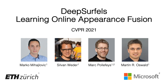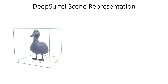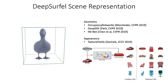We approach the problem of online appearance fusion with deep circles, a novel hybrid representation for geometry and appearance information. Scenes are traditionally represented by meshes or voxel grids, which encode the scene in an implicit manner. Recently, multiple methods have been proposed to encode the scene with neural implicit representations. Some of them encode the scene with a single vector of features or a set of network weights.